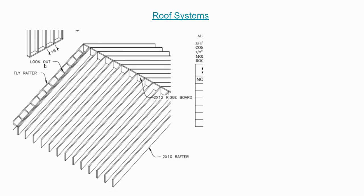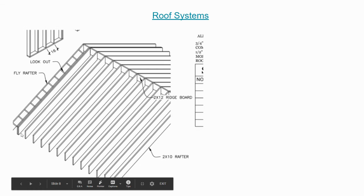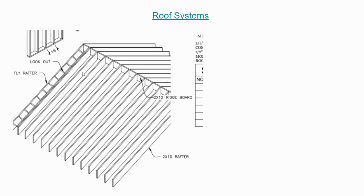Here is some roof terminology covering the basics of framing. Rafters frame into the ridge board. If you want an overhang on the soffit side, you just extend the rafters past the wall by the desired projection. For a rake side overhang, you use what are called lookouts, and the rafter on the side being held out by those lookouts is called either the fly rafter or barge rafter.